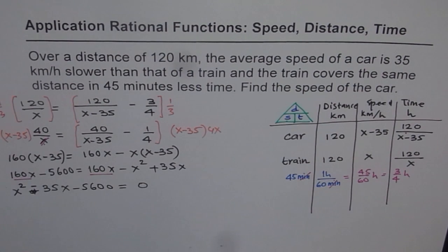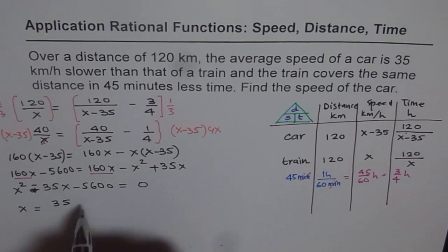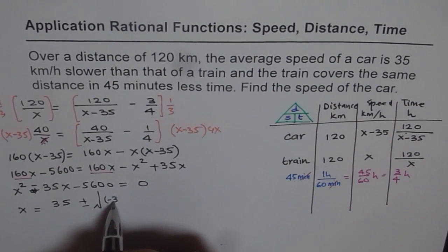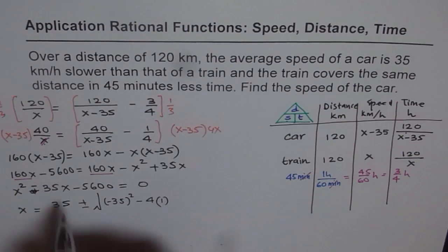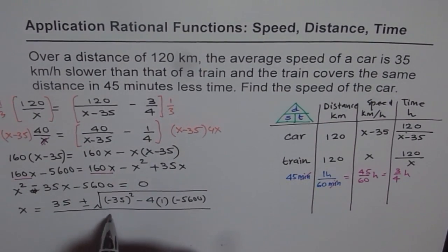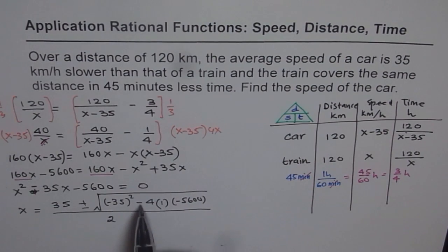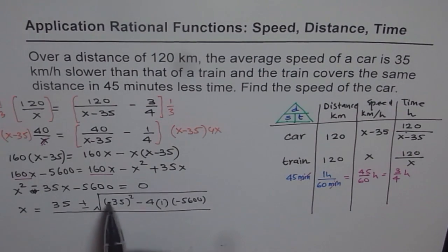We'll use the quadratic formula. With a = 1, b = −35, c = −5600: x = (35 ± √(35² − 4(1)(−5600))) / 2. Since minus times minus is plus, we add all terms inside the square root. That gives √(1225 + 22400) = √23625, which equals 15√105, approximately 153.7.